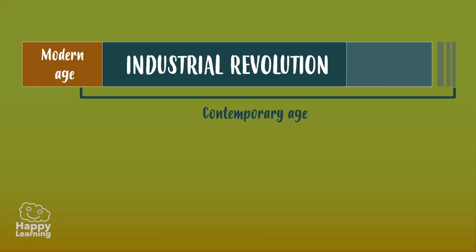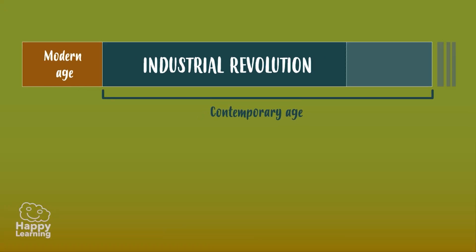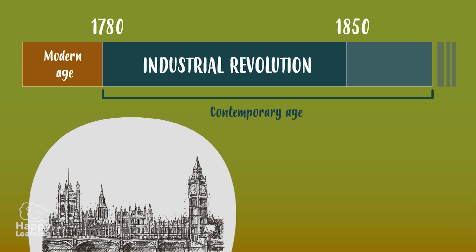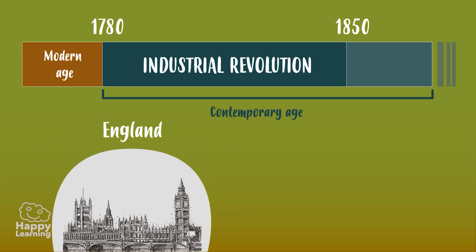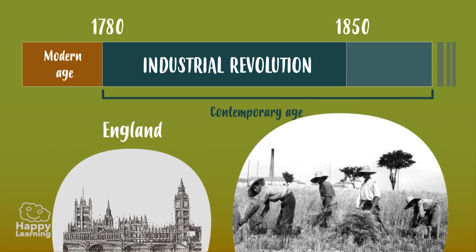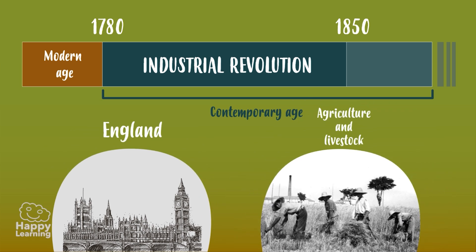The Industrial Revolution is a stage of history that goes from 1780 to 1850 and began in England. For almost the entire history of mankind, life had been based on agriculture and livestock.